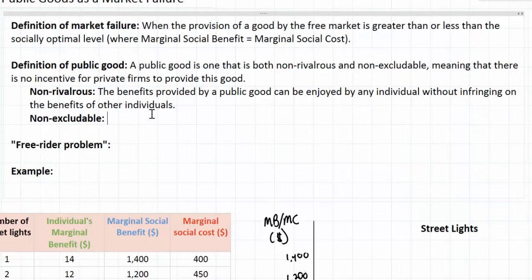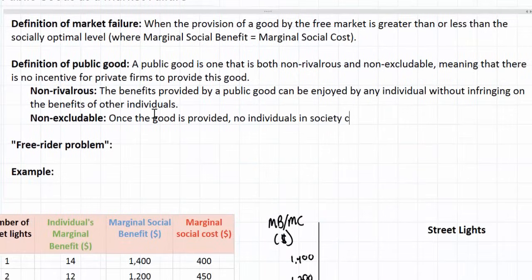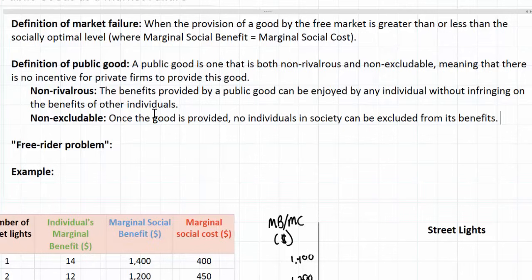The second defining characteristic of a public good is that it must be non-excludable. This means that once the good is provided, no individuals in society can be excluded from its benefits. Think about the street lamp: once a city has installed street lamps and they are turned on at night, no individual can be excluded from using that service — somebody who doesn't even live in that city but comes to visit still benefits from the provision of those lights. Both defense and street lamps fit these definitions. Defense is non-excludable because anyone living within the borders of a country cannot be excluded from the protection provided by that military.